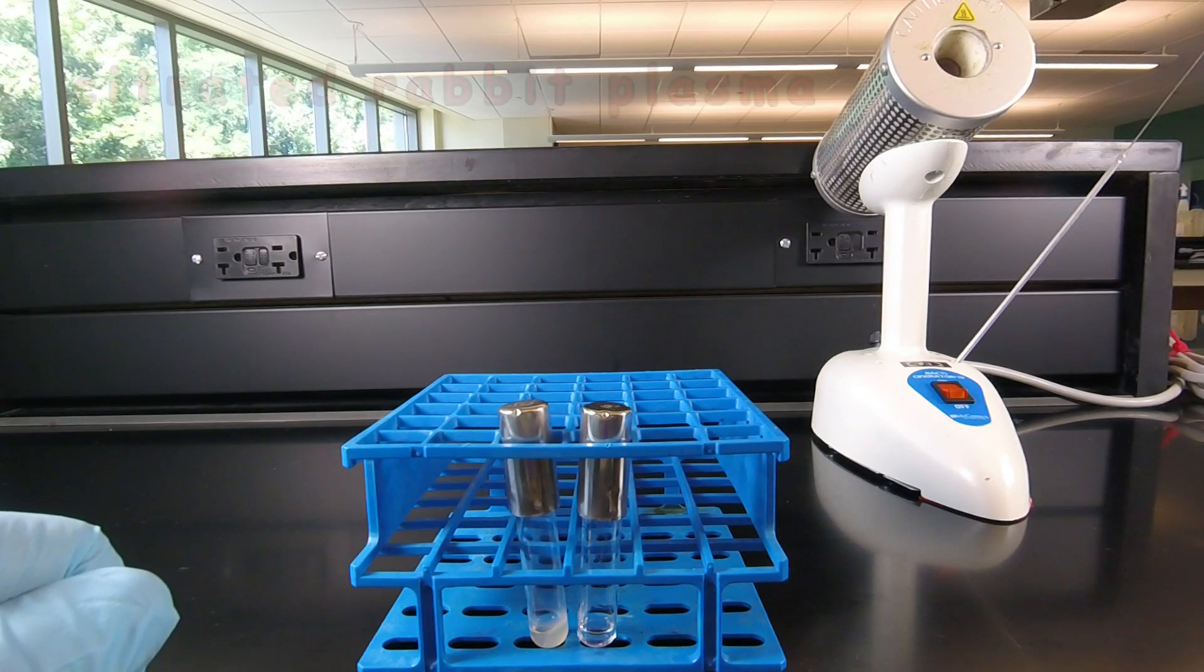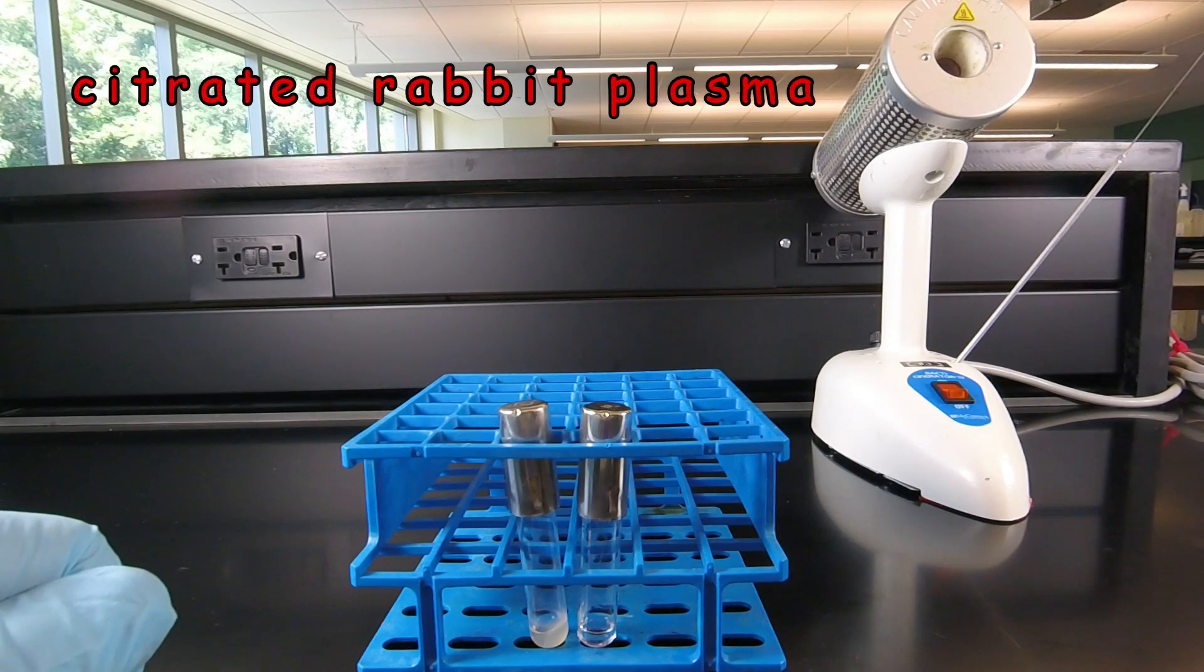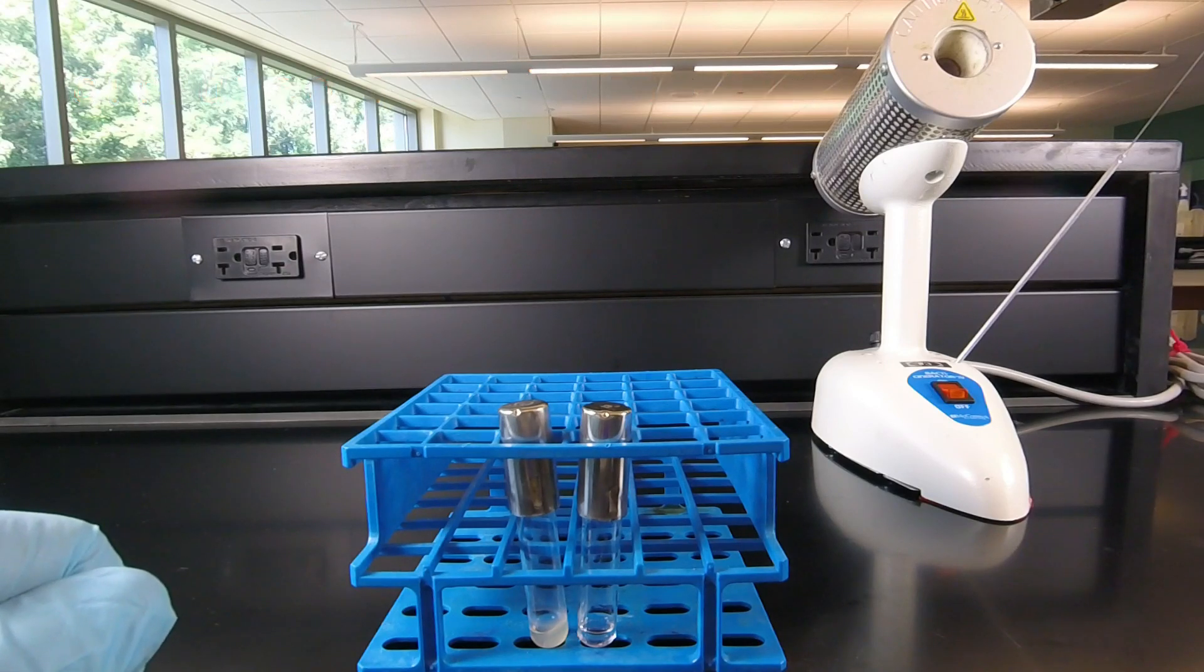which causes citrated rabbit plasma to gel or coagulate. The enzyme coagulase causes soluble fibrinogen to be converted into insoluble fibrin.